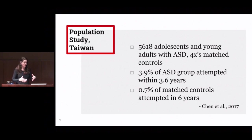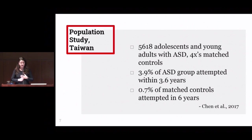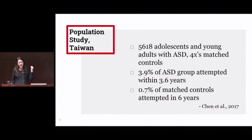There was a population-based epidemiologic study in Taiwan where they looked at 5,618 adolescents and young adults with autism spectrum condition and four times the number of matched controls. Within a period of three and a half years after entering the study, almost 4% of the people with autism attempted suicide. In a period of six years, less than 1% — 0.7% — of the matched controls attempted suicide, showing a huge difference in youth and young adults with autism.